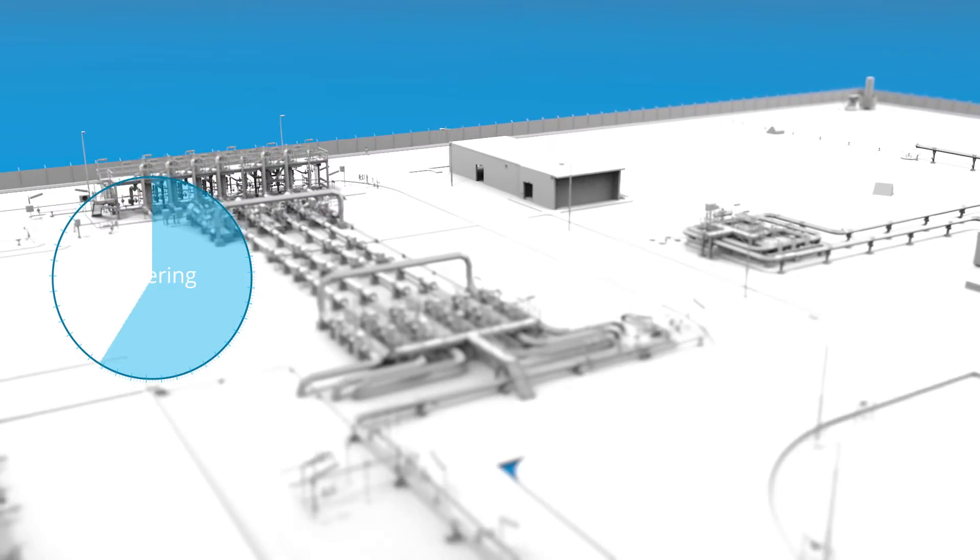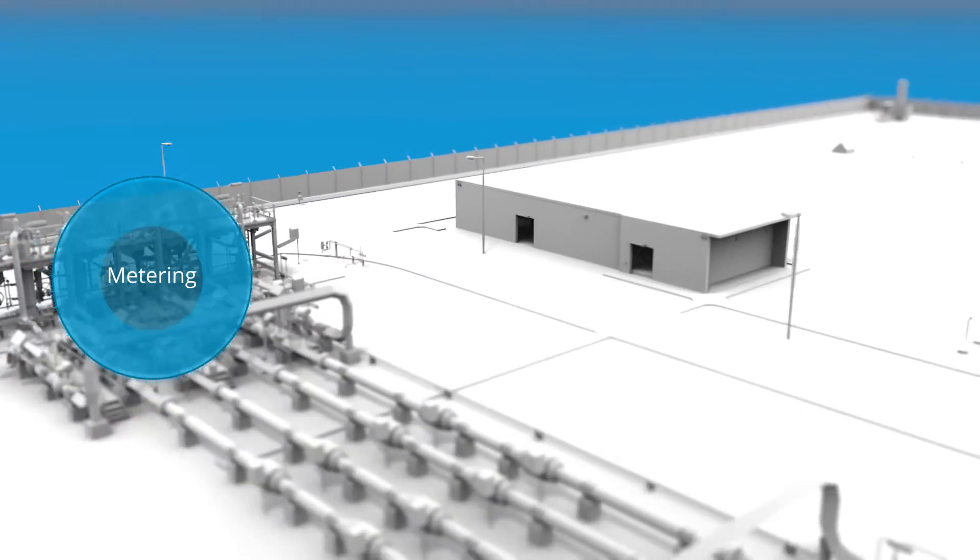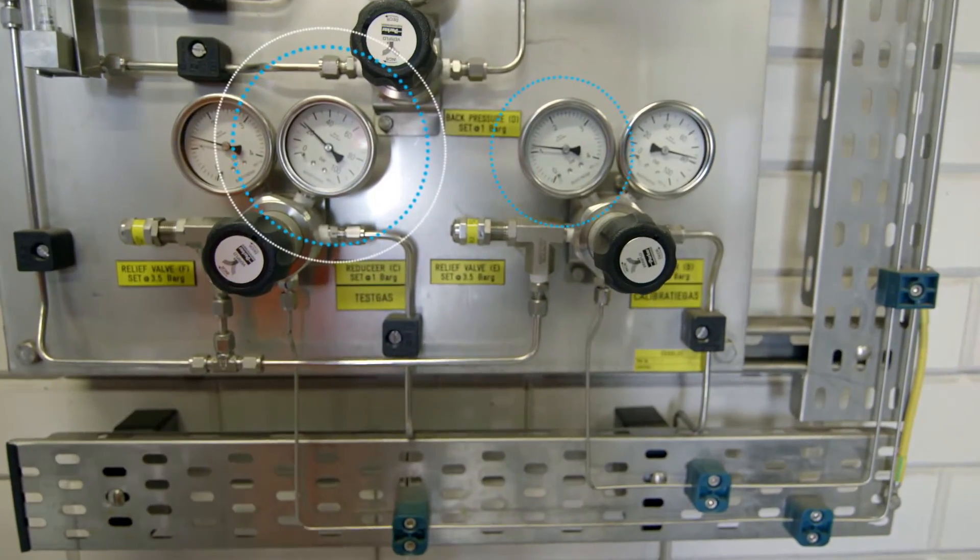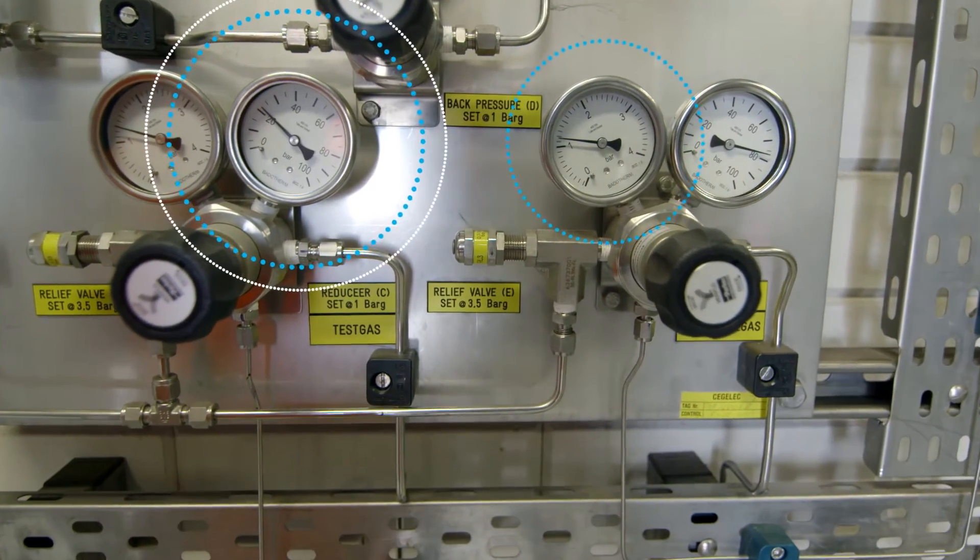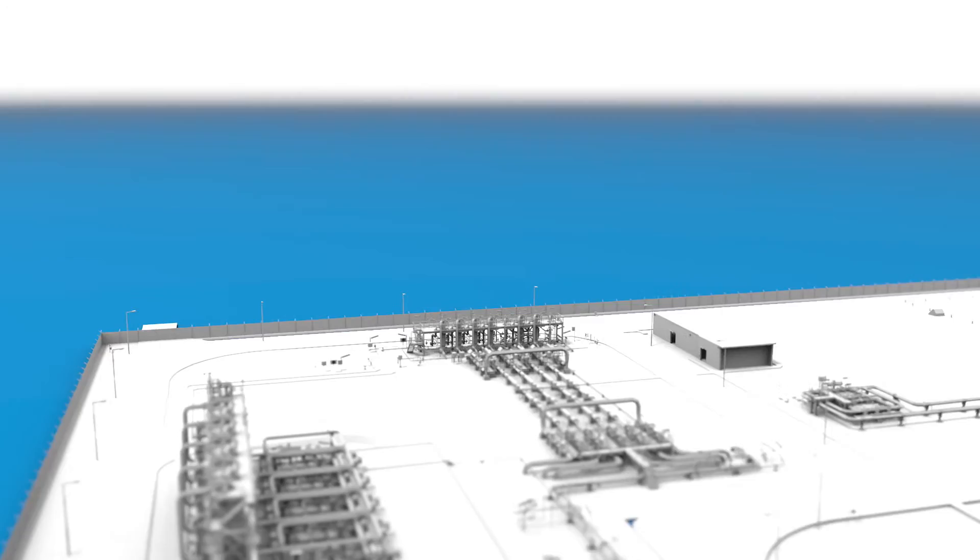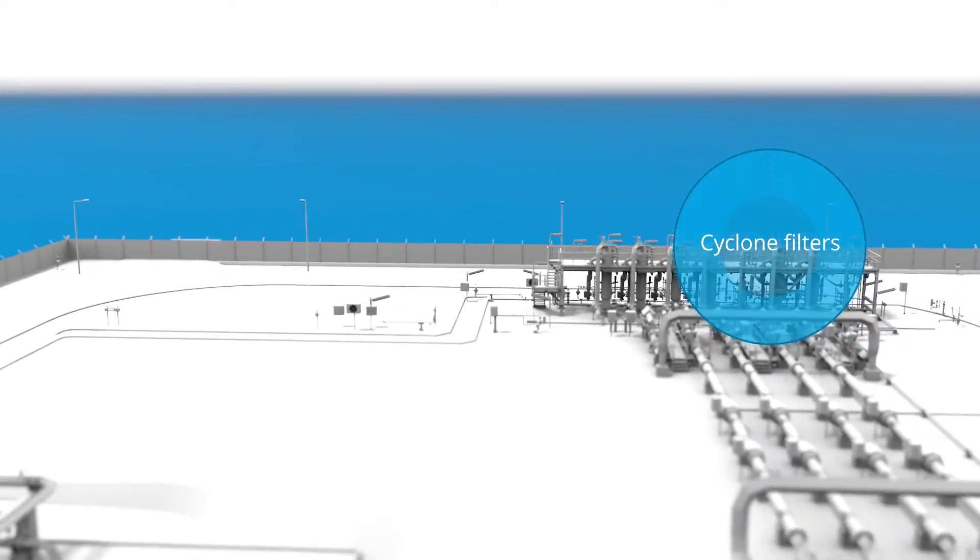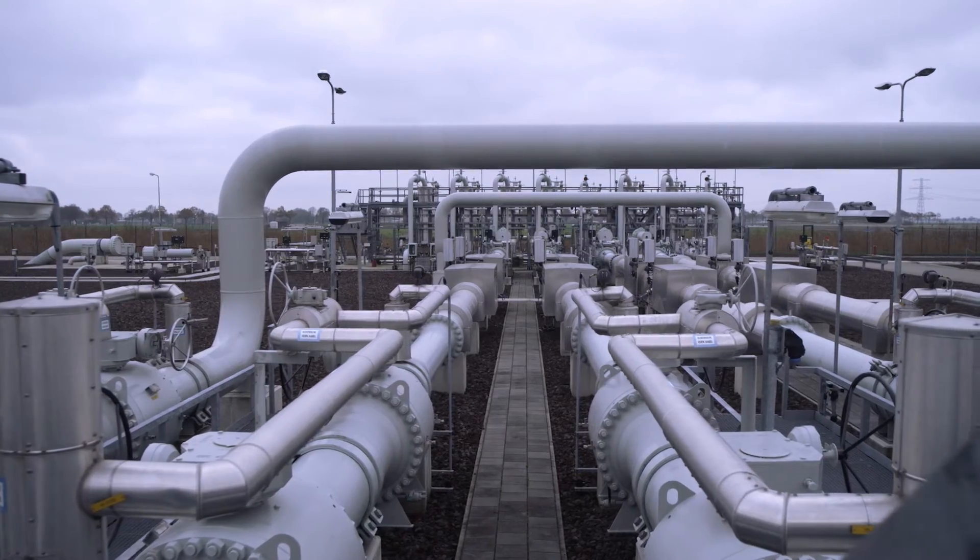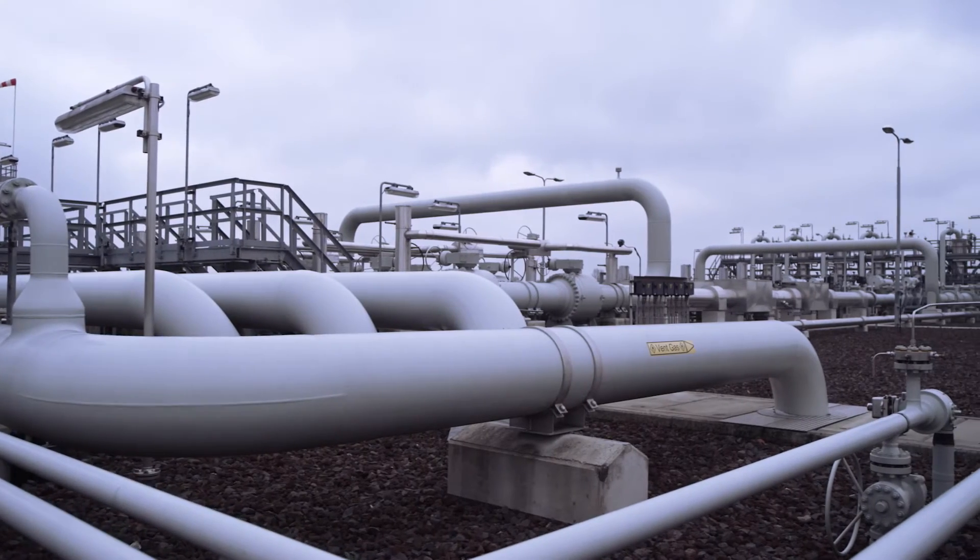The gas flows are measured during both injection and withdrawal. This allows to determine precisely how much gas is being injected into the caverns and how much is being supplied to the transmission network. Before the gas is measured, it is cleaned by cyclone filters to prevent any small particles which may be present from contaminating the installation.